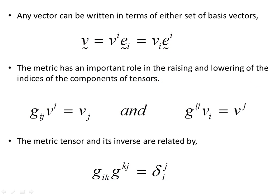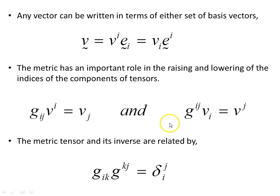Now the metric has an important role in raising and lowering the indices of the components of tensors, of which a vector is a rank-1 tensor. The metric tensor g_ij takes the i indices — via Einstein summation convention — and lowers the index to j, giving us v_j (covariant). We have thus converted contravariant vector components into covariant vector components. Likewise, we can raise indices with the inverse metric tensor g^ij, turning v^j into contravariant components. The metric tensor and its inverse are related by g_ik g^kj = δ^j_i (Kronecker delta).